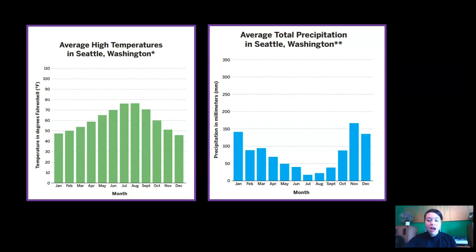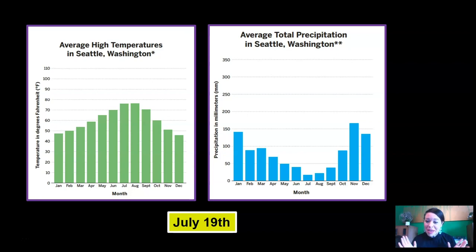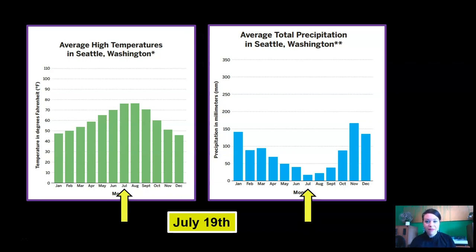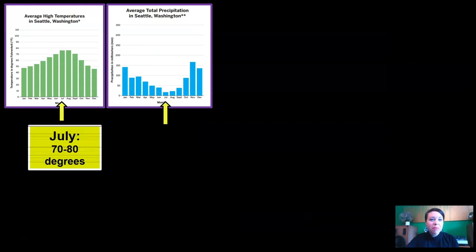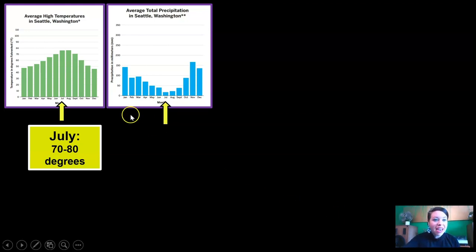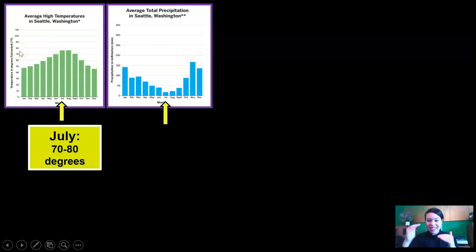I'm going to do this first for my own birthday to show you how. My birthday is July 19th. I'm a summer baby, and looking at these graphs I'm going to point to the month of July on both graphs. For temperature, I should expect around 70 to 80 degrees — I figured that out by going to the top of the July bar and seeing that it's in between 70 and 80 degrees.